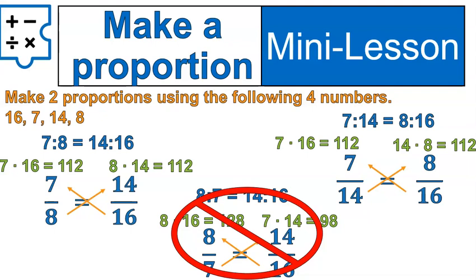You might also notice that if you take those fractions and flip both of them upside down, you'd be multiplying the same numbers. So 14 to 7 is equivalent to 16 to 8. So there's lots of different proportions that can be made out of four numbers. On the worksheet, you will be asked to do a couple of questions like this. I think two questions like this, where you'll be asked to actually make your own proportions when given four numbers.